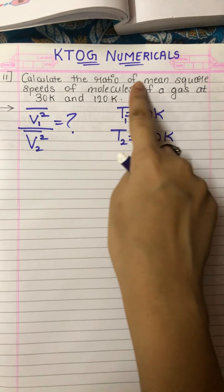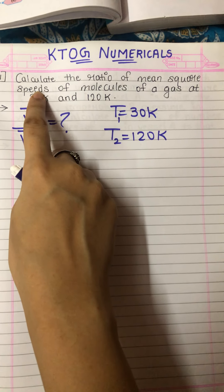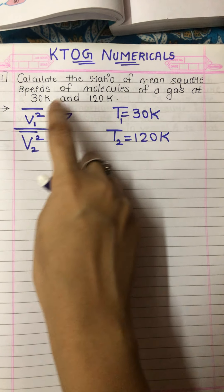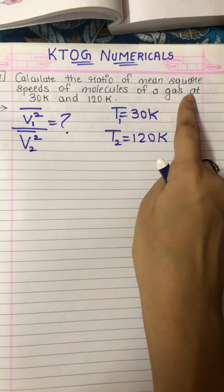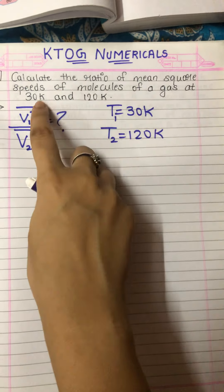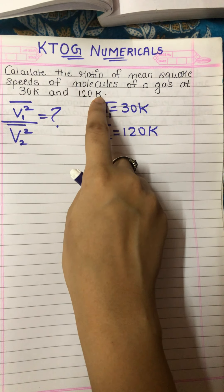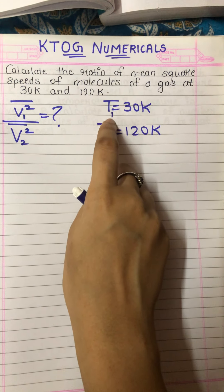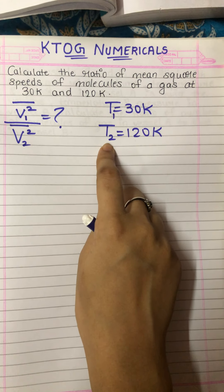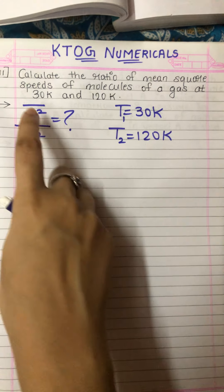Calculate the ratio of mean square speed of molecules of a gas at temperature 30 Kelvin and the next temperature 120 Kelvin. Let the first temperature be T1 and the next temperature be T2, that is 30 Kelvin and 120 Kelvin.